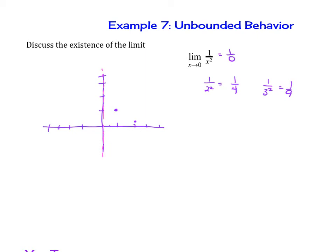Now if we plugged in a number, let's say a half, so 1 over 1 half squared, notice that's going to be 1 over 1 fourth or 4. So it's going to be all the way up here. So notice this is really what's happening on the right side.